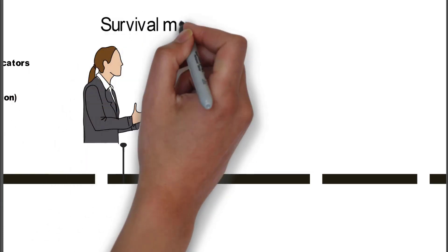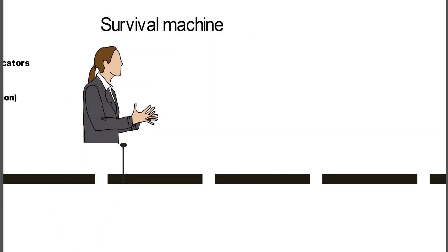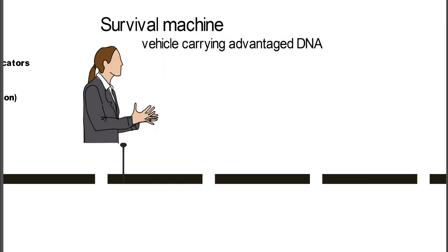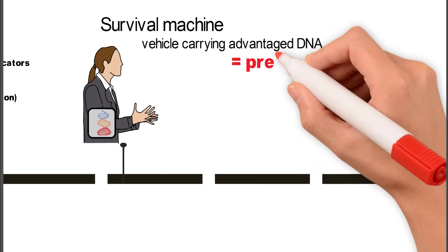He talks about how we are our survival machines. We're this vehicle that's carrying the advantaged DNA. We have millions of them, right?